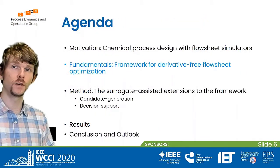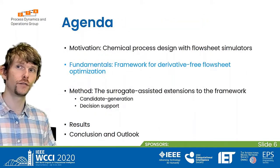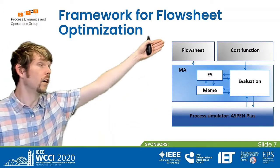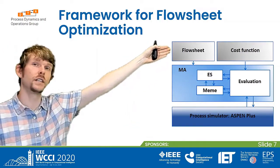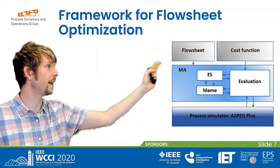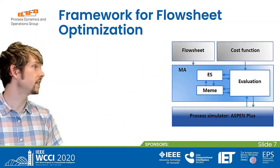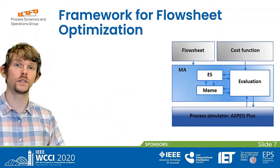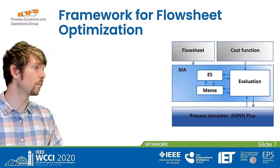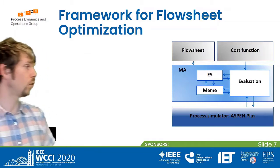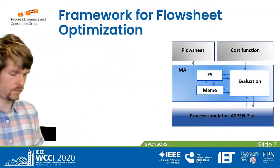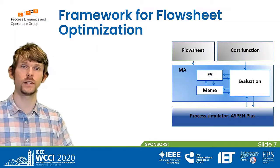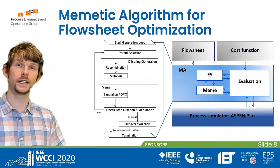Let's continue with some fundamentals. I will show a framework for derivative-free flow sheet optimization. It consists of inputs where a chemical engineer provides a flow sheet and a cost function, and a memetic algorithm consisting of an evolution strategy (ES) and some memes. A key module is the evaluation, which links the cost function with the process flow sheet simulator Aspen Plus.